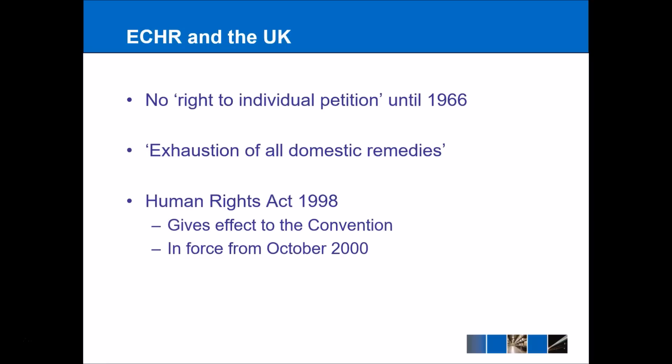In the UK, there was no right to individual petition until 1966. So the convention came into force in 1953, but you as an individual couldn't actually bring a case until 1966. Even after 1966, it was quite hard to do this because you had to exhaust all domestic remedies first. In other words, if you brought a case in the High Court, it would have to be appealed to the Court of Appeal and then the House of Lords before you could go to the European Court of Human Rights. This would take four or five years and be hugely expensive, including paying lawyers' fees throughout.